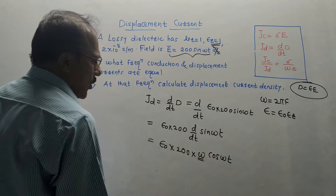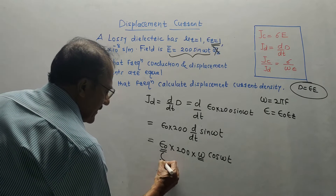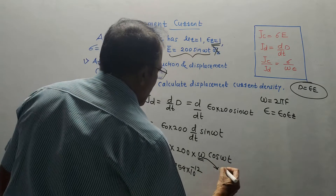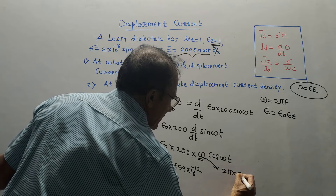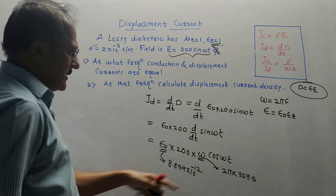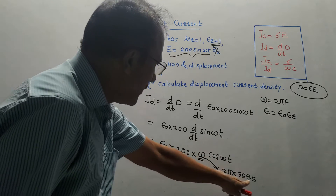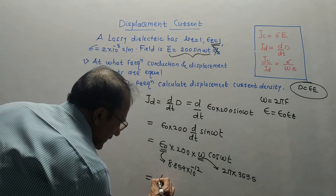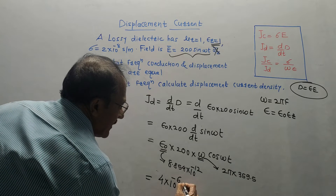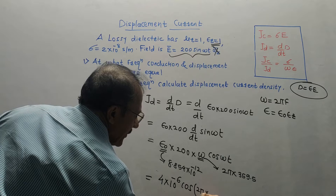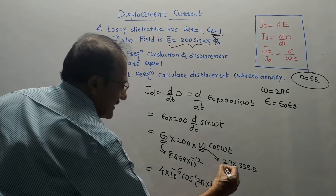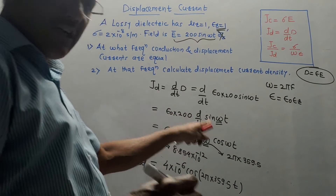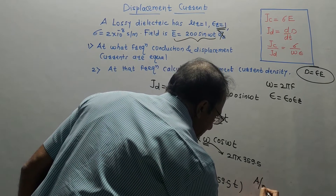Putting in the values: epsilon_0 is 8.854 × 10⁻¹², and omega equals 2πf, which is 2π times 359.5 Hz. The final answer for JD is 4 × 10⁻⁶ cos(2π × 359.5 × t). This is the displacement current density, so its unit is amperes per meter squared.